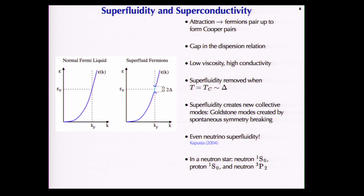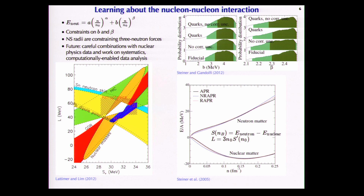Superfluidity is ubiquitous in nature — even neutrinos can be superfluid. If your dark matter particle is a fermion with some attraction, it will also have a superfluid gap; it's just a matter of computing what that gap is and whether it's relevant at the temperature of interest. In a neutron star, superfluidity is also ubiquitous. There's neutron superfluidity and proton superconductivity, and at high densities there's triplet superfluidity — a 3P2 Cooper pair that is spin-symmetric rather than spin-antisymmetric — a called triplet superfluidity.